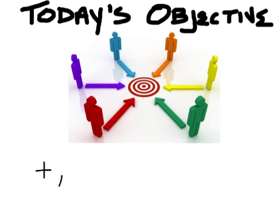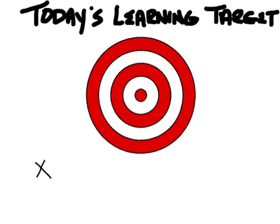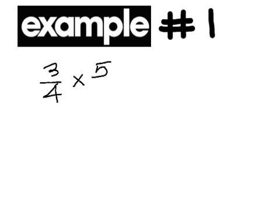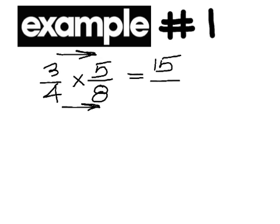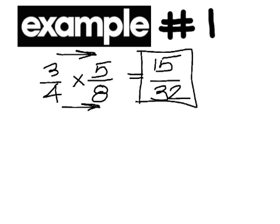Today's objective continues from adding, subtracting, multiplying, and dividing fractions. But more specifically today, the learning target will be to multiply and divide fractions. Example number 1: multiplying fractions. 3 over 4 times 5 over 8. If you're going to multiply fractions, you multiply straight across, left to right. 3 times 5 is 15, and 4 times 8 is 32. There is no number other than 1 that goes into 15 and 32, so that is your final answer.